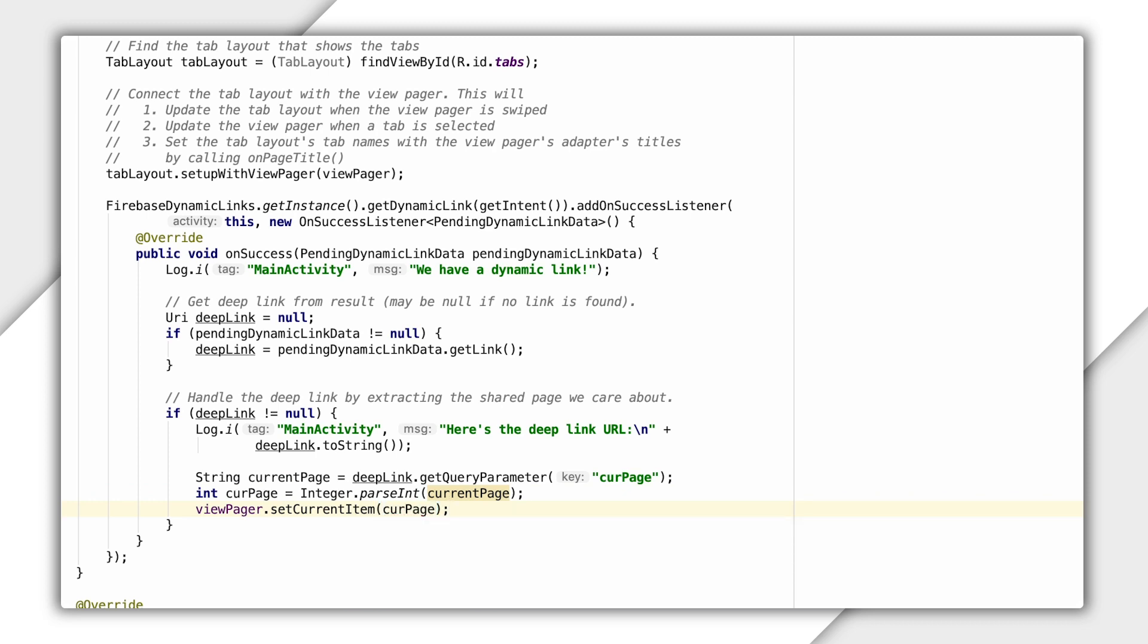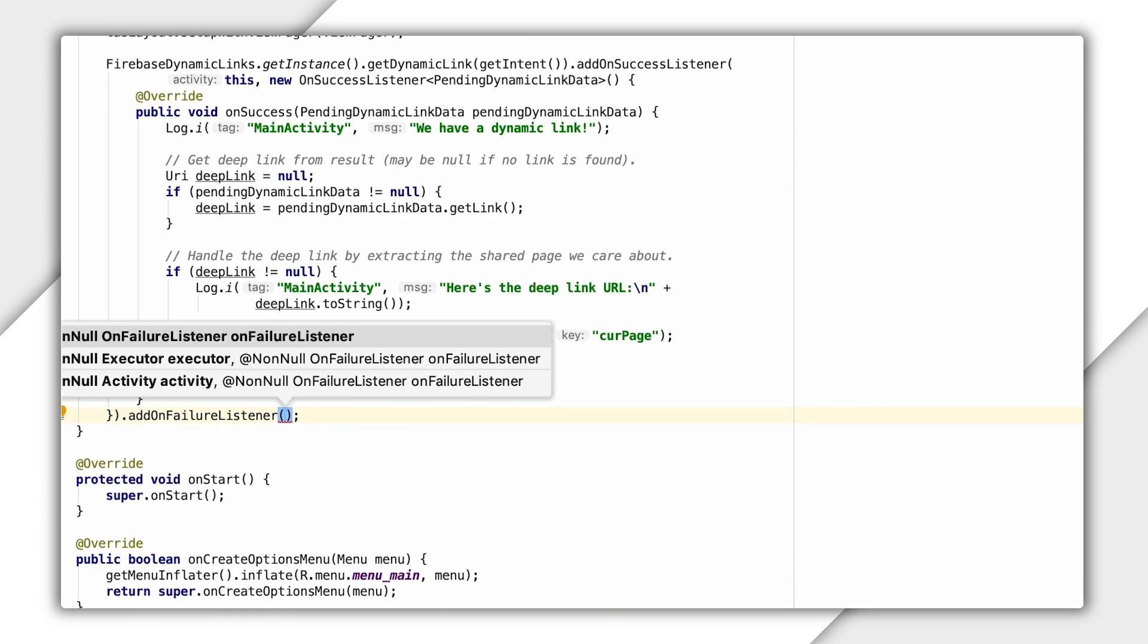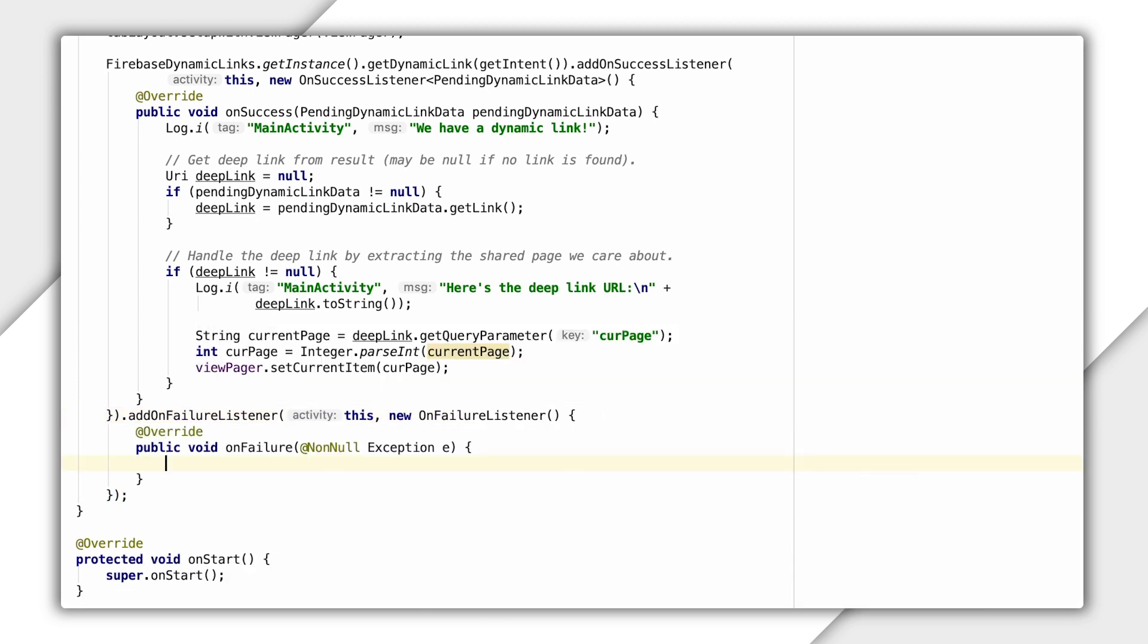So I'll extract the URL link parameter and capture that in my string variable, like so, and after getting the current page, I'll set my view pager appropriately. This part might not be as important for you to note here, as you'll want to modify this to fit whatever makes sense for your app logic. And of course, we'll also need to add a failure listener in case there are any errors retrieving the dynamic link data. So I'll add that here as well and just log the fact that we couldn't retrieve the dynamic link data.